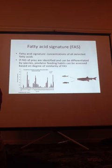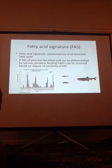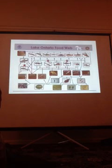If you have that signature, based on the degree of similarity to something like a lake trout, you can tell whether the lake trout is consuming more alewife or something like the round goby — that's just an example. So I'm going to be looking at the lake here, looking at top predators and native prey species.